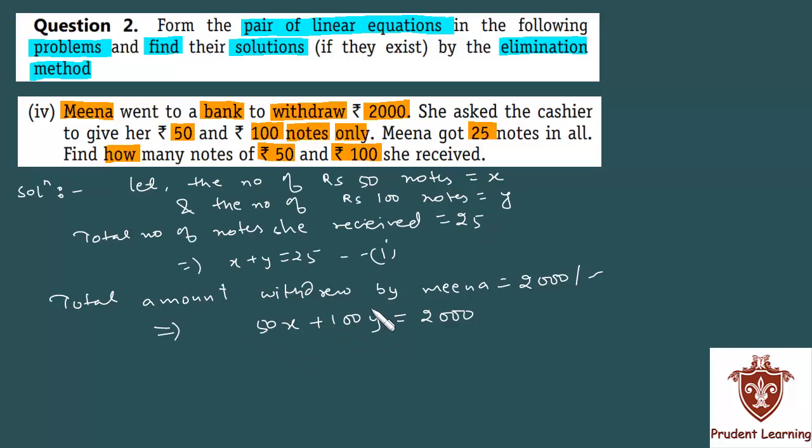And the total of all these notes equals 2,000 rupees. You can simplify this further by dividing throughout by 50, which gives x plus 2y equals 40. This is equation 2.